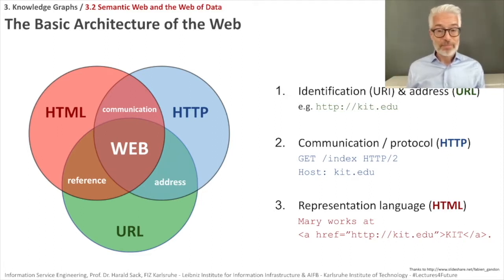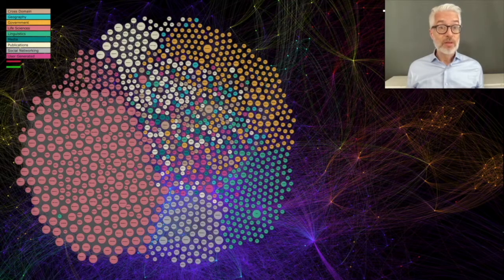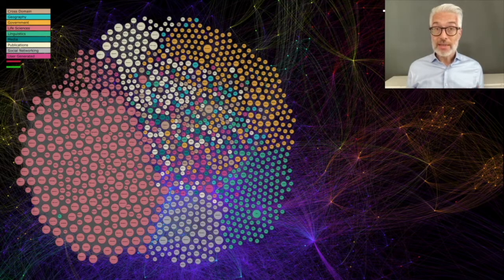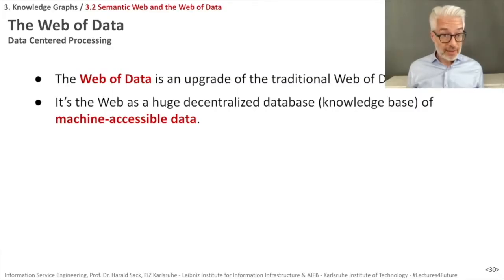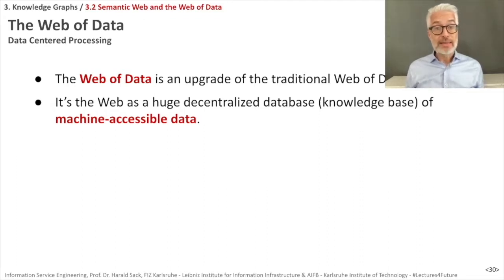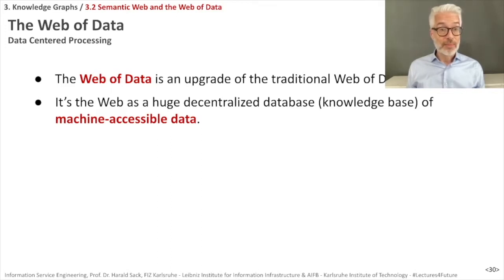We want to go a step further. Based on the web today there is the web of data — not only documents linked with each other, but huge collections of datasets linked to each other forming the so-called web of data. The web of data is an upgrade of the traditional web of documents and is the web as a huge decentralized database or knowledge base. If you use semantic web languages to denote the meaning of these documents and datasets, all of this data becomes machine accessible.